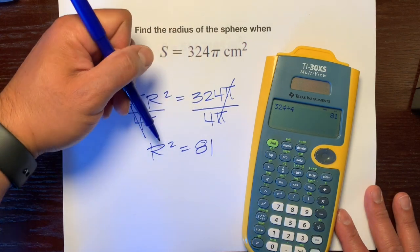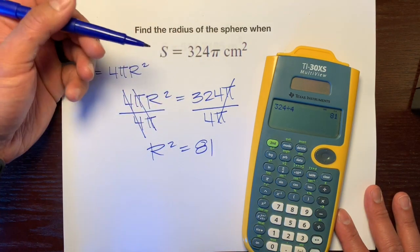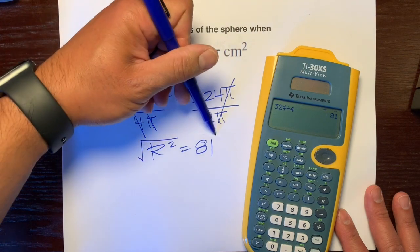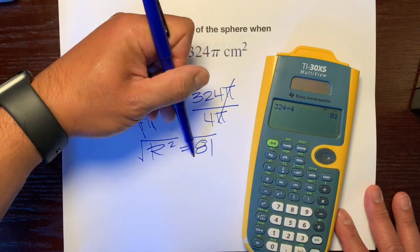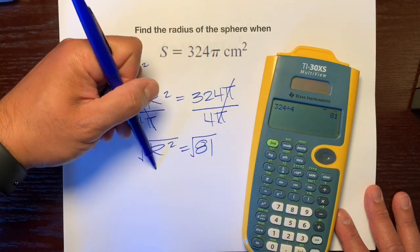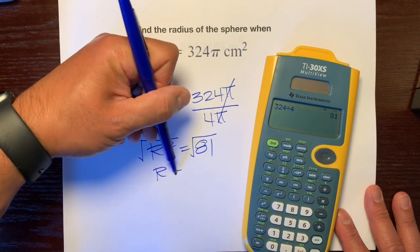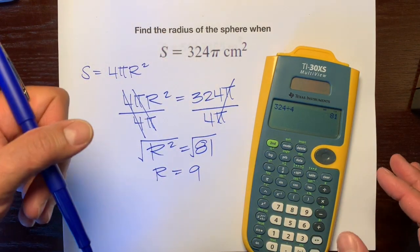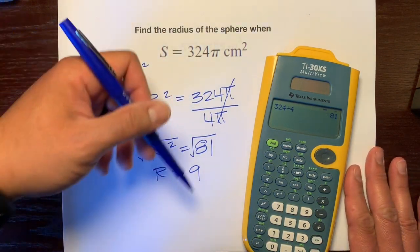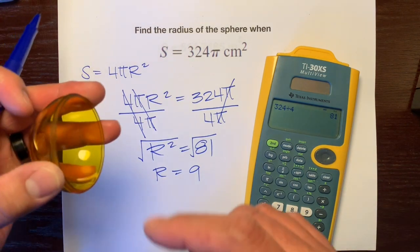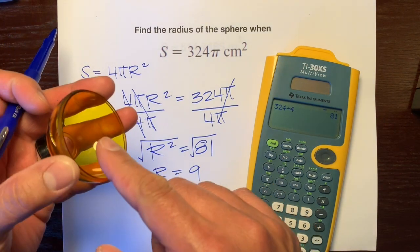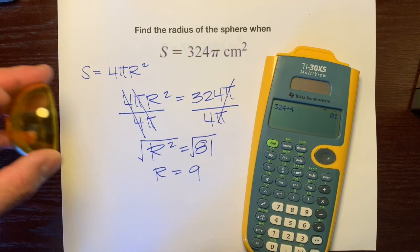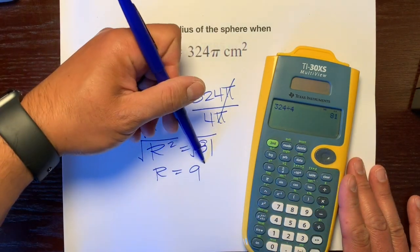We're not done yet because there's still a square. The opposite of squaring something is square rooting. The square root of 81 is 9. So the radius of this sphere — going from the center of the sphere to any point on the sphere — is 9.